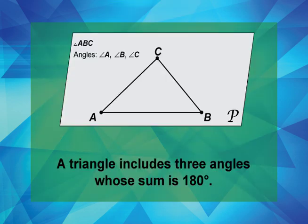A triangle includes three angles whose sum is 180 degrees. A triangle can be classified by the types of angles in the triangle. Let's take a closer look.